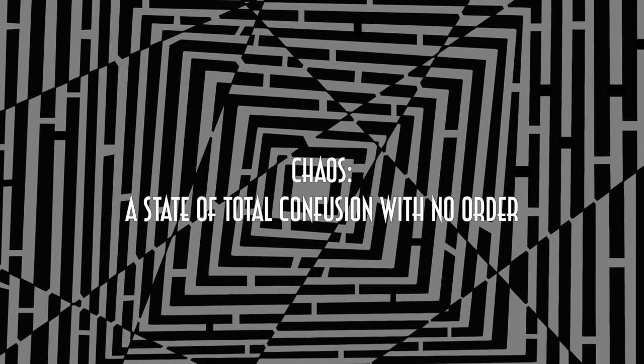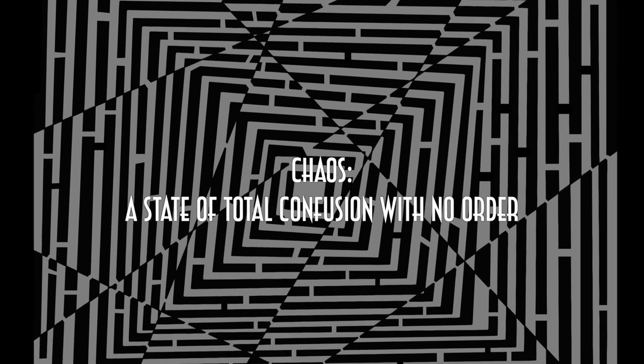Let's start by talking about chaos. The Cambridge Dictionary defines chaos as a state of total confusion with no order. But there is always order. You just have to decode the patterns.